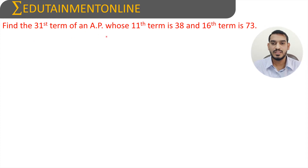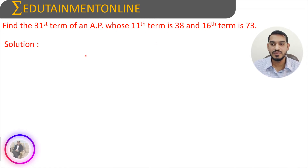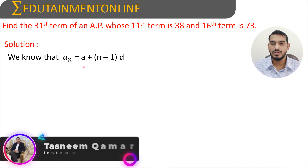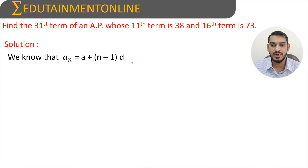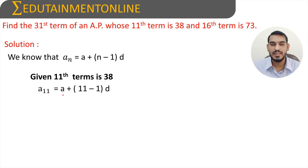Find the 31st term of an AP whose 11th term is 38 and 16th term is 73. We know that the nth term formula is: a_n = a + (n - 1)d. It is given that the 11th term is 38, so a_11 = a + (11 - 1)d, which gives us 38 = a + 10d.